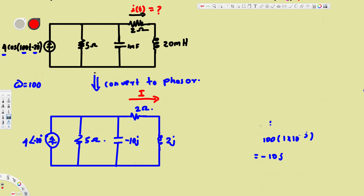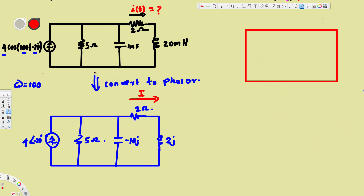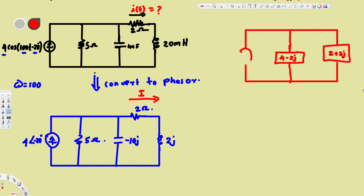Now let's combine the impedances. The 2 ohm resistor and 2j inductor are in series, so the new impedance is 2 + 2j. That combination and the -10j capacitor are in parallel, so we do product over sum. Plugging into the calculator gives us 4 - 2j. The current source remains 4∠-20°.